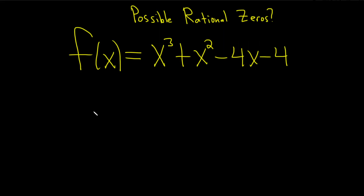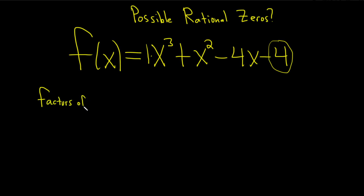In this problem we have a polynomial function, and the question wants us to write down the possible rational zeros. The way it works is you look at the last number — so 4 or negative 4 — and look at the leading coefficient. You want the factors of negative 4 over the factors of 1. It's always last over first.